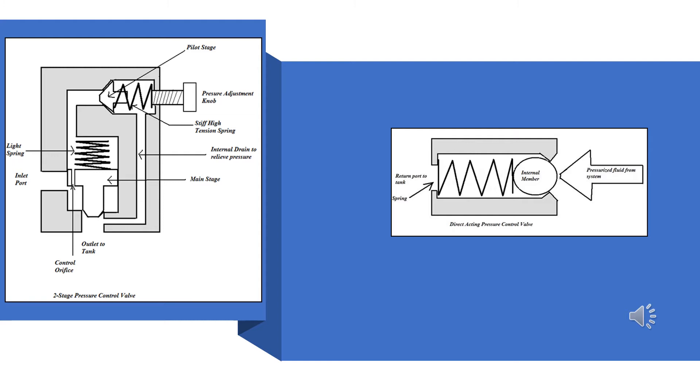By comparison, the valve on the left is more efficient, and if you look at the illustration, you'll notice that there are two different valves in the same body. The larger of the two is called the main stage. The smaller, the pilot stage.